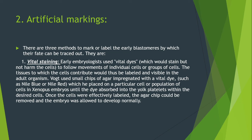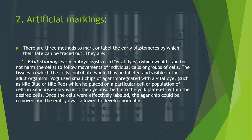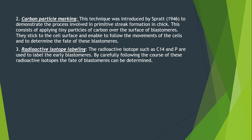Here is an image showing a blastula-stage embryo — this is the Nile experiment showing how it was done. The small agar chip, which was dye-impregnated, was placed on the embryo. After the cells absorbed the stain, the chip was removed. Once the embryo grew, you can see a stained brain and stained notochord — showing that the stain was absorbed before the chip was removed.